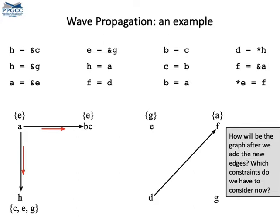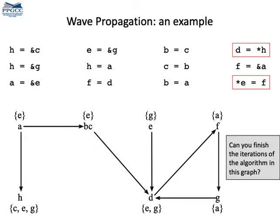Now we need to iterate the complex constraints. We have two complex constraints. To solve the first, that is D equals star H, right here, we look into the points-to set of H. It contains three values. These are C, E, and G. We then add edges from C to D, from E to D, and from G to D.